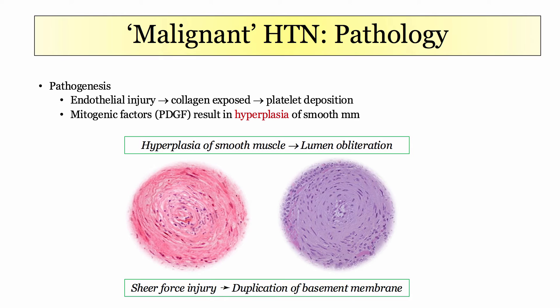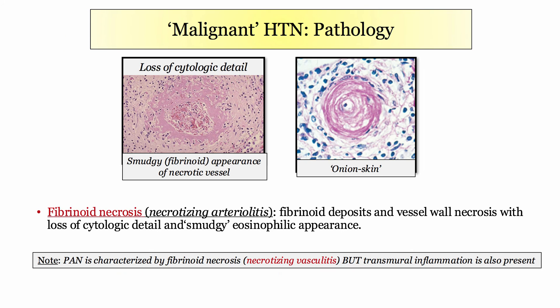The activated platelets release growth factors that result in hyperplasia of smooth muscle, pictured in the right graphic. The result is lumen obliteration. The left graphic demonstrates the duplication of basement membrane, resulting in the characteristic onion skin appearance. In terms of other pathologic descriptions, malignant hypertension will be described by fibrinoid necrosis or necrotizing arteriolitis.